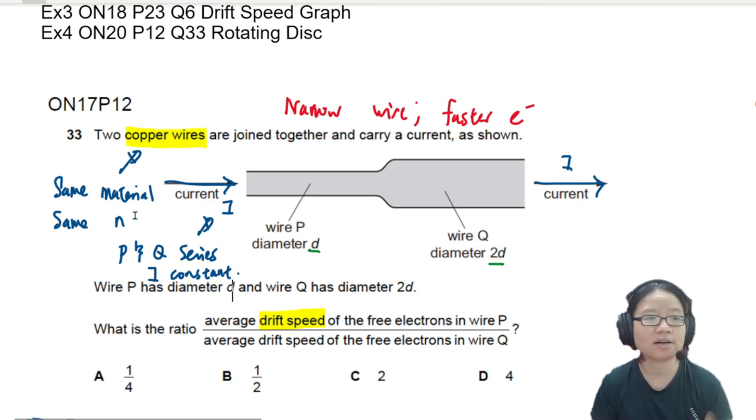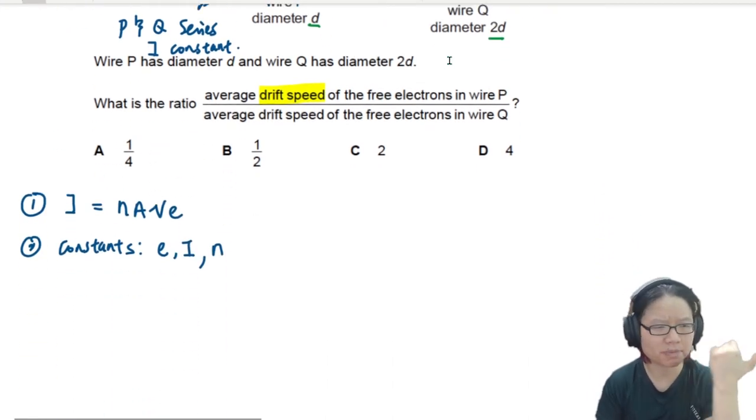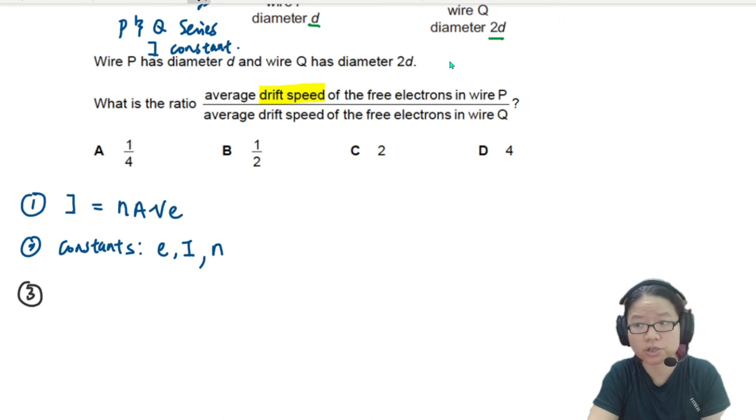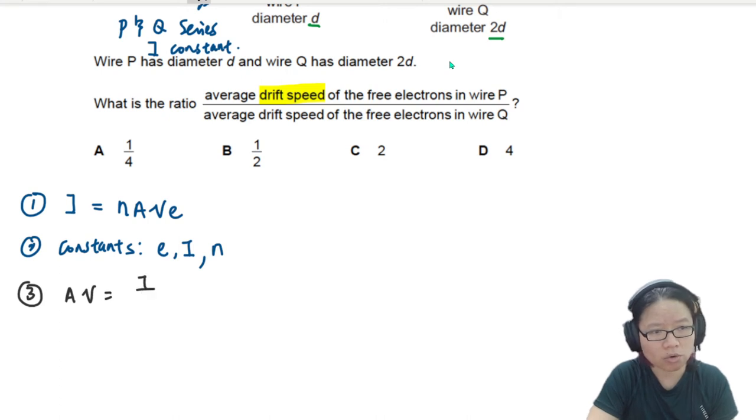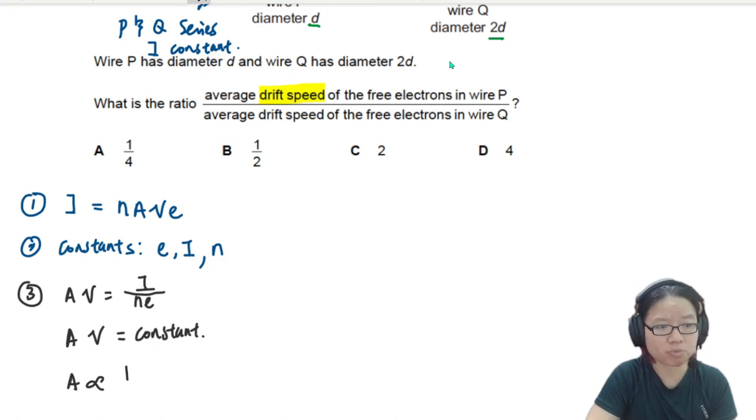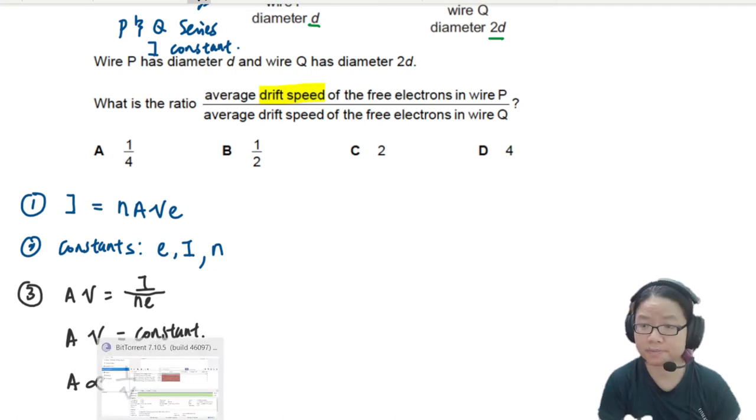So you have determined all your constant. I is constant, N is constant, and electric charge is constant. Wow, teacher, not much, not many people left. Oh yes, not many people left. So then, number three, if you need to, you can rearrange. If you don't need to, you can straight away write this. I can just isolate out AV is equal to I over NE. And I over NE is constant. So I can write AV is equal to constant. And because of this, I can say A is inversely proportional to drift speed.